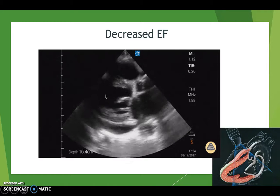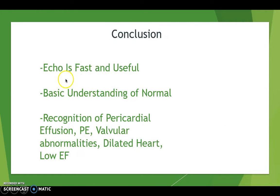In conclusion, echo is a very fast and useful tool. Hopefully you've gained a basic understanding of what normal looks like and how to recognize certain pathologies: pericardial effusion, pulmonary embolism, valvular abnormalities, and other problems. The key takeaway is that an ultrasound takes 30–45 seconds and can give you a ton of information. Thanks for checking this out — if you have any questions, feel free to ask.